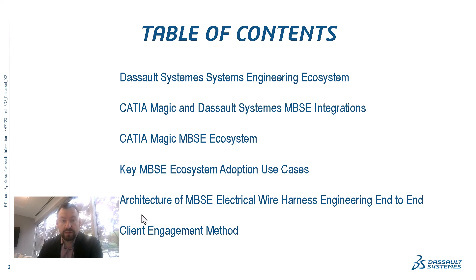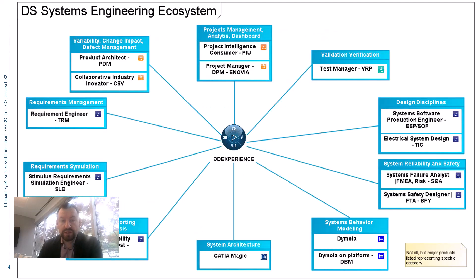First, the source systems engineering ecosystem. These are not all products of the source system, but the most representative ones in each section, representing system engineering related tasks and being part of the workflow useful for system engineering.